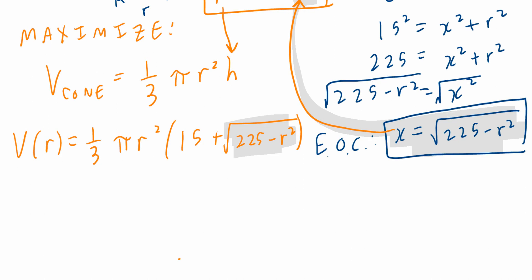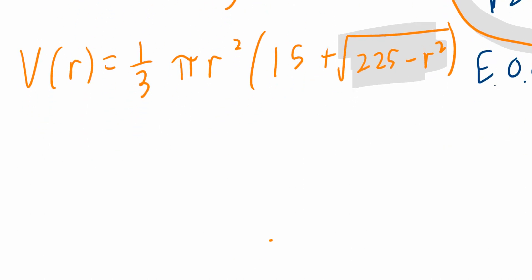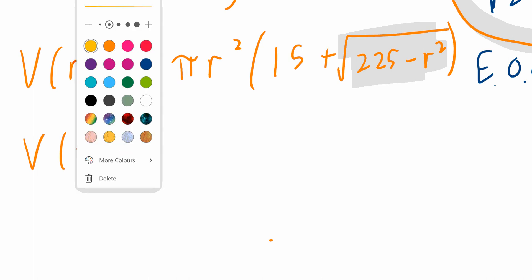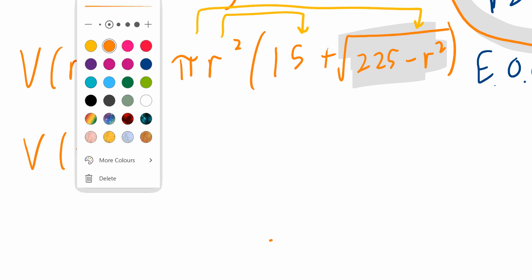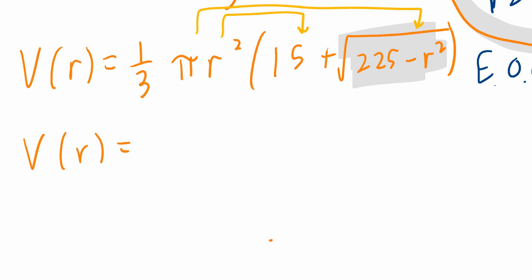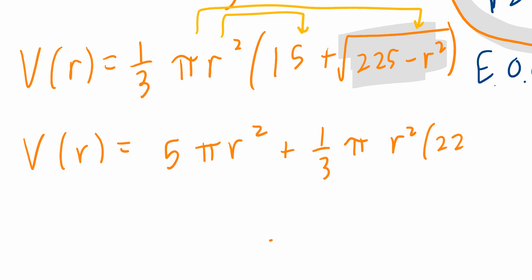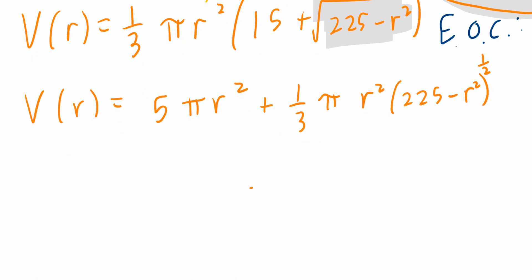We're almost ready to take the derivative, set it to zero, and solve for r. Before we find v prime, I'm going to expand this. If you want to expand using the arrows, this is always available to you. This is going to be one-third pi r squared times 15 — that's 5 pi r squared — plus one-third times pi times r squared times 225 minus r squared to the power of one-half. We're now ready to take the derivative, set it to zero, solve for r.